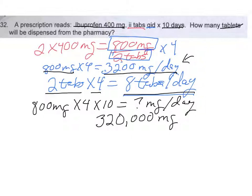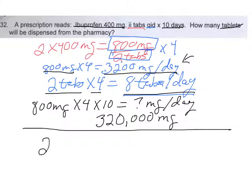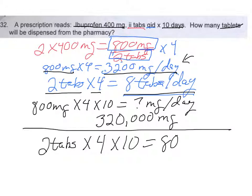The reason I showed milligrams first is that it's very important — when trying to find out if a patient is taking too much medication or overdosing, you want to look at it in milligrams or grams, not just tablets. You've got to be able to look at it both ways. So that's a simple way to find a dose, the daily dose, and how much to dispense. Now I'm going to continue on with another problem.